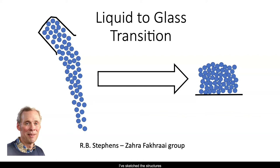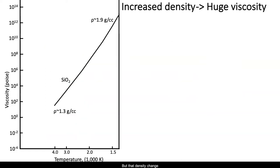I've sketched the structures above. There's the hot liquid on the left, cooler glass on the right. Looking at the structure, the difference between the liquid and glass is remarkably subtle. One can only see that the glass is a little more dense. But that density change influences its viscosity enormously.